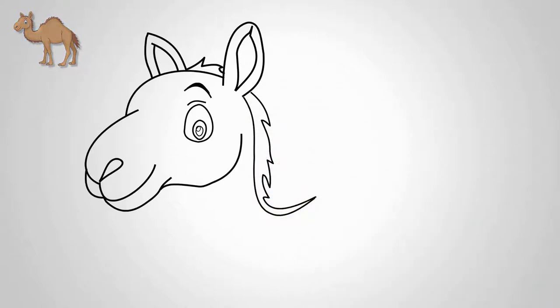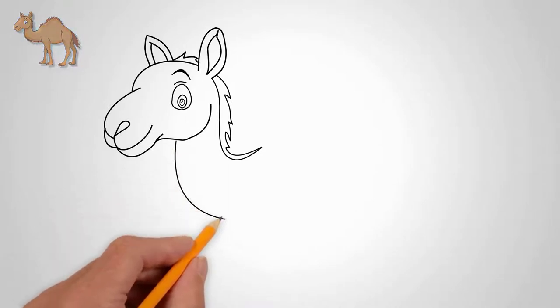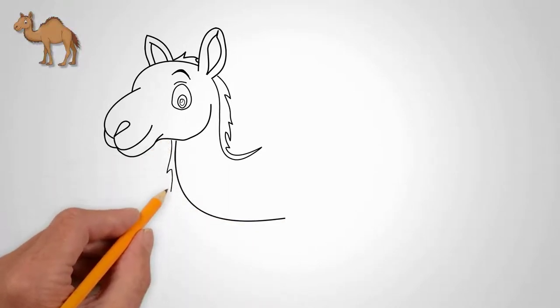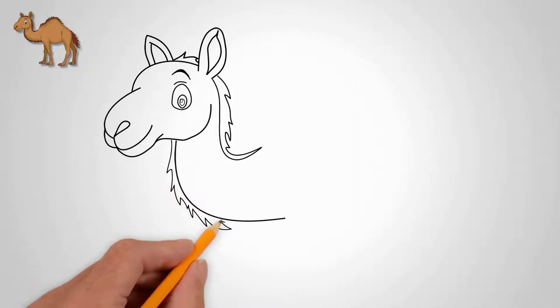Draw a mane between the ears. Draw the neck from the head down. The neck of the camel is long and curved. On the neck of the camel, above and below, draw a large coat.